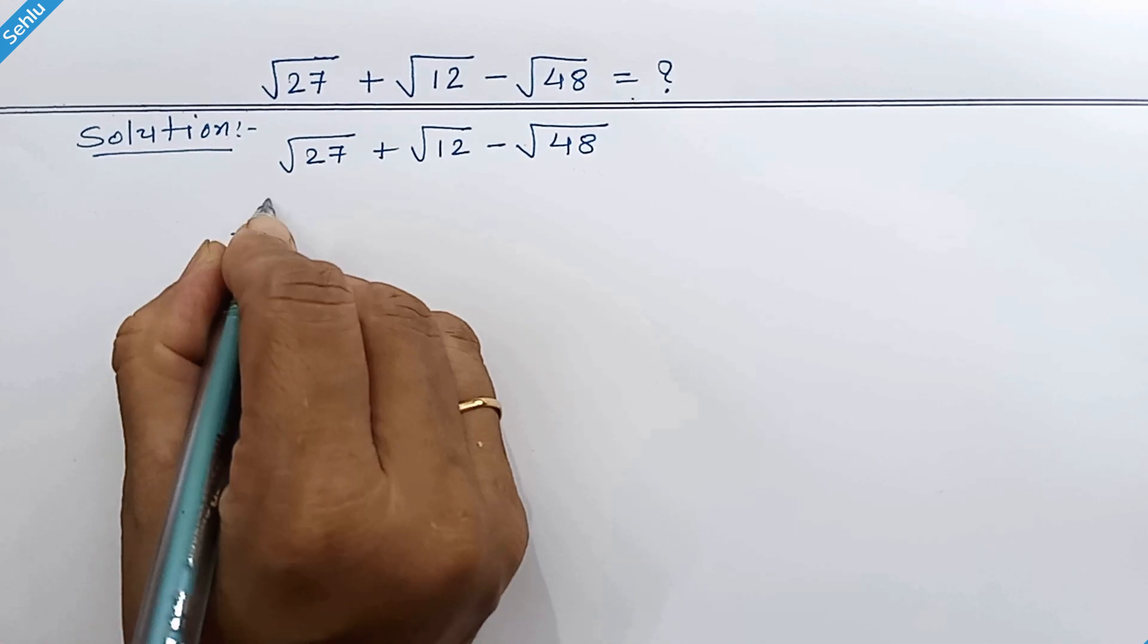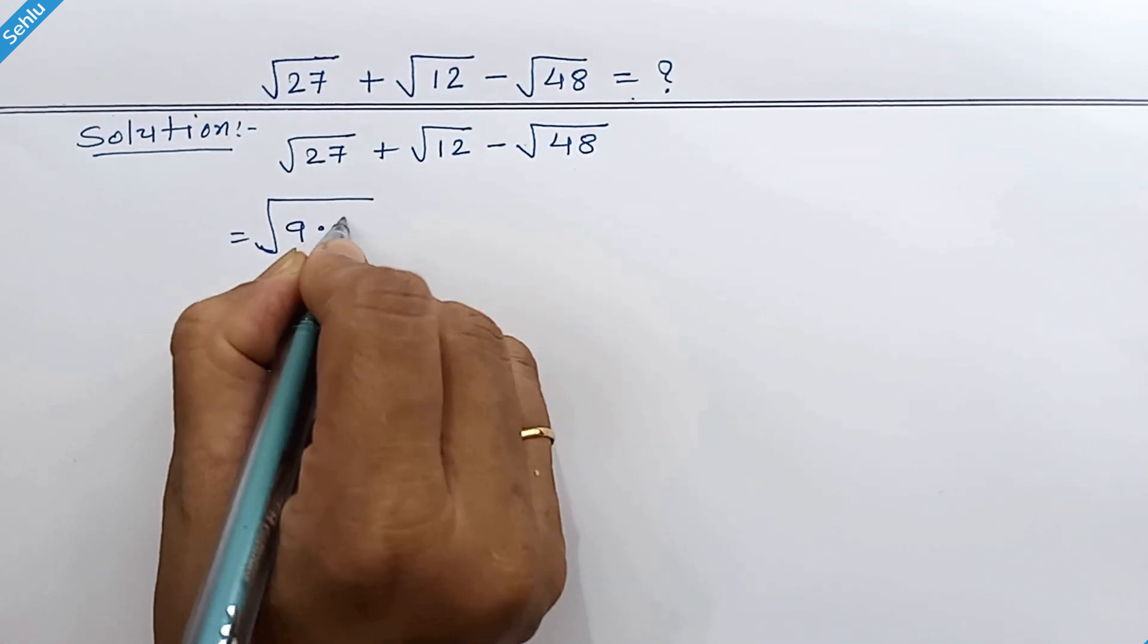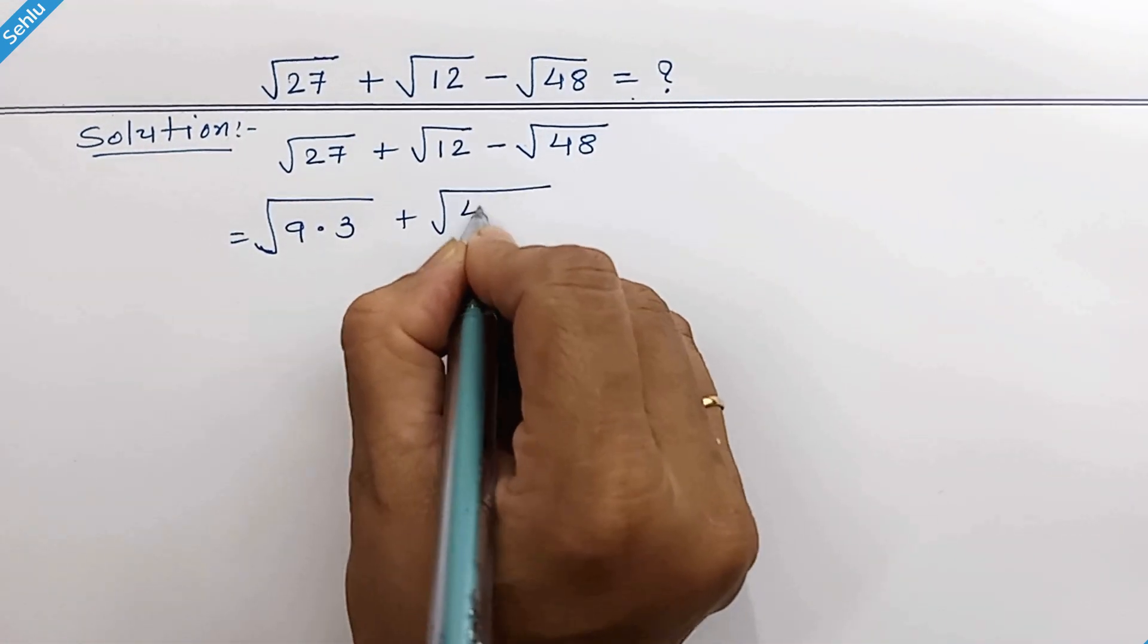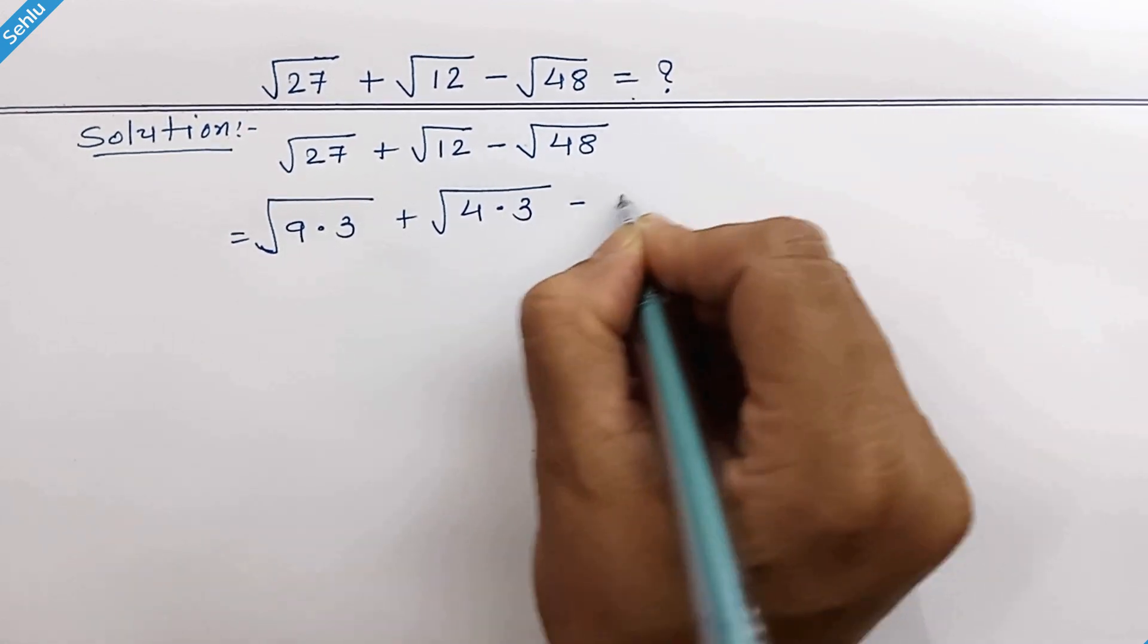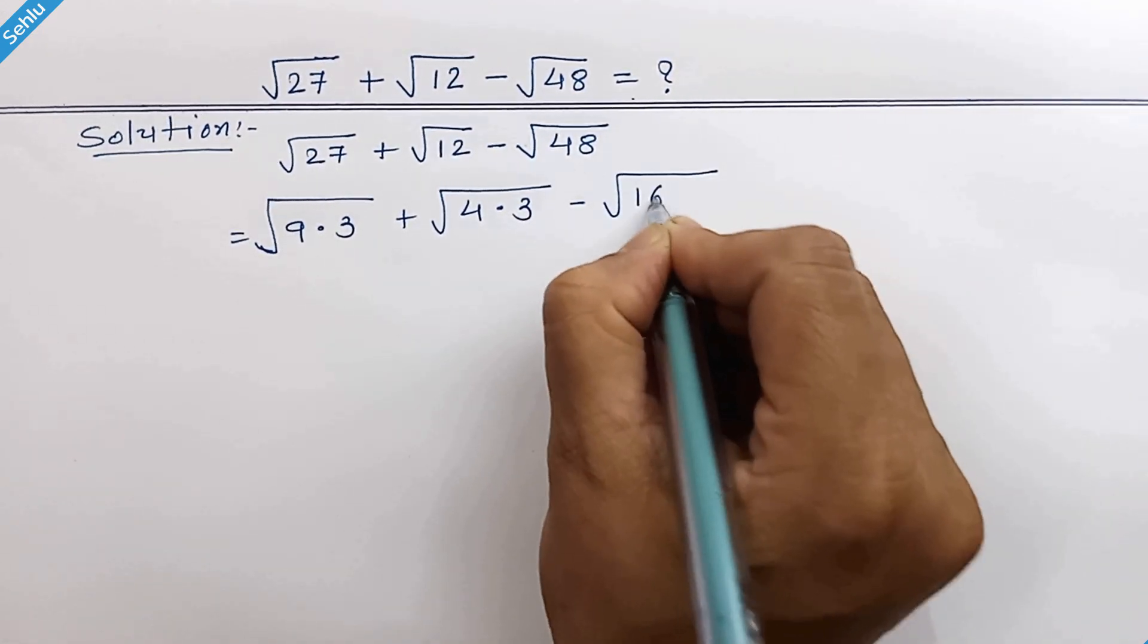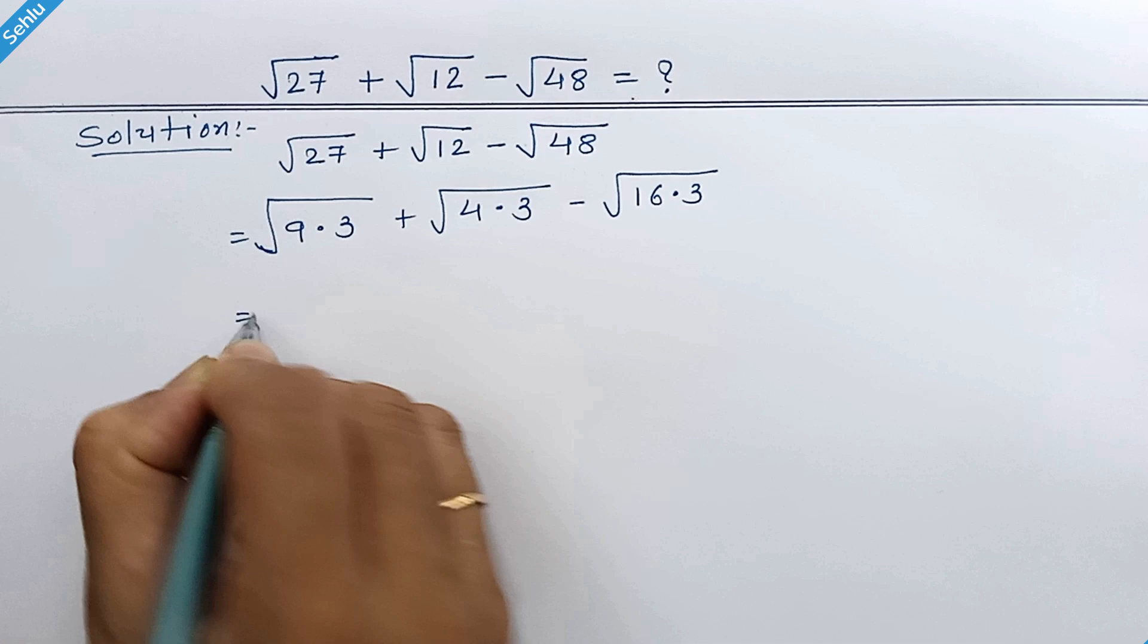Square root 27 is 9 times 3, 12 is 4 times 3, and 48 is 16 times 3. Let's write them separately.